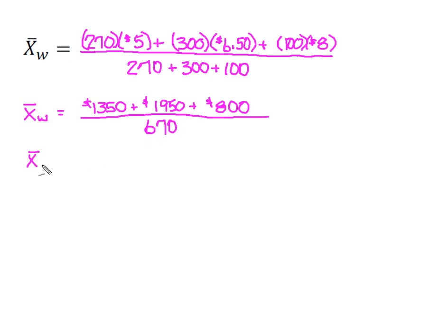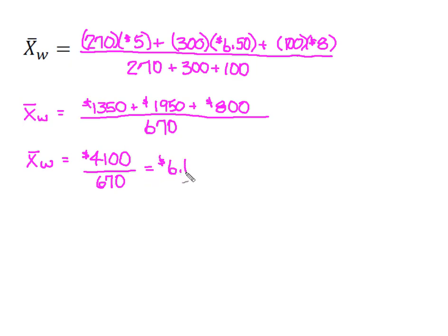When I do that math up top, that gives me $4,100 that they spent on apples. And in exchange for that $4,100, they got 670 bushels of apples. So when we divide that out, we get 6.119, which I'm going to round and tell Tar Heel that their average price per bushel of apples was $6.12.